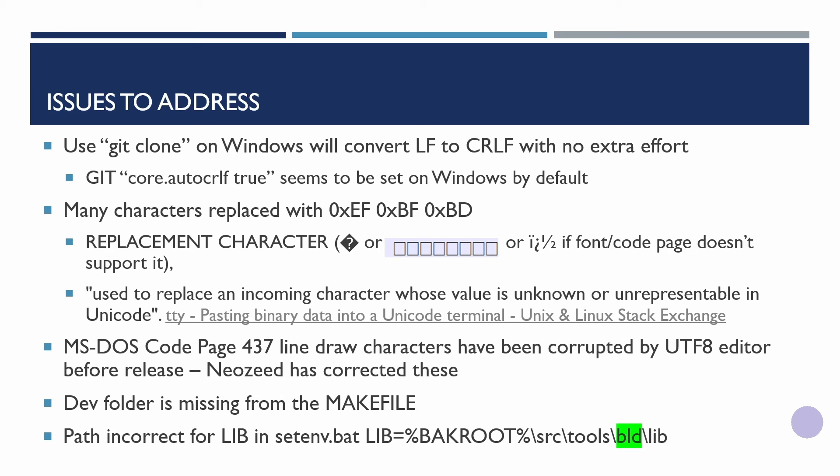Various blogs and video articles have addressed things in all sorts of different ways and they're all valid. The main issue is that depending on how you get the code, the GitHub code has line feeds by default — not carriage return line feeds — and the utilities provided with the source to actually build this won't work. The easiest way to address this is to use git clone on Windows; it will automatically convert line feeds to carriage return line feeds with no extra effort. On my default git installation on Windows, this auto CR line feed is set to true by default.